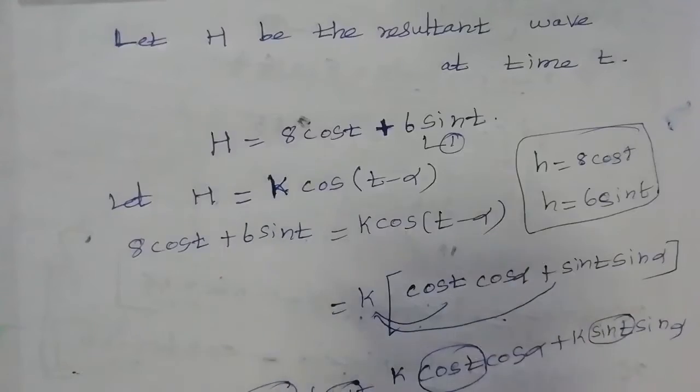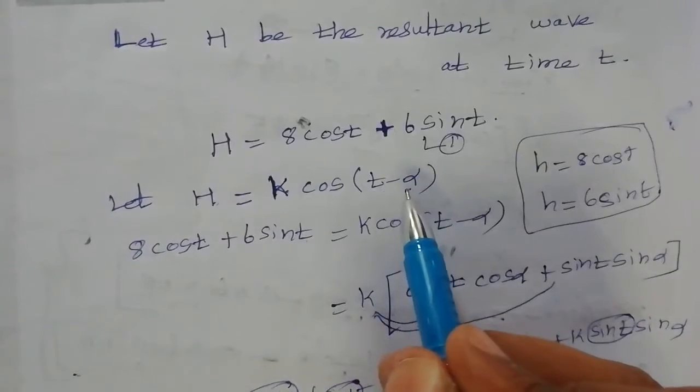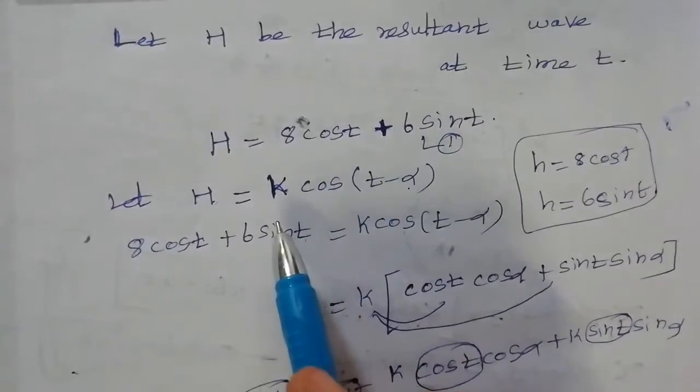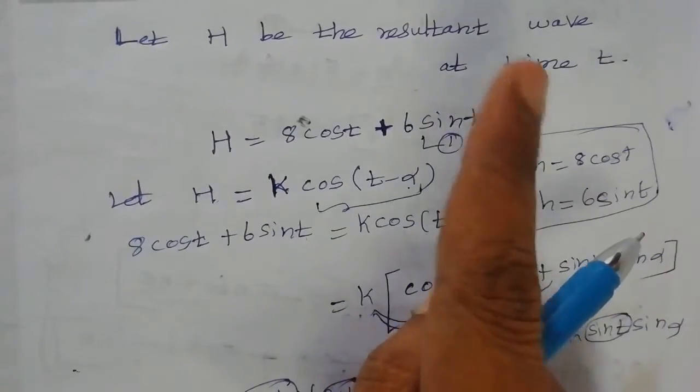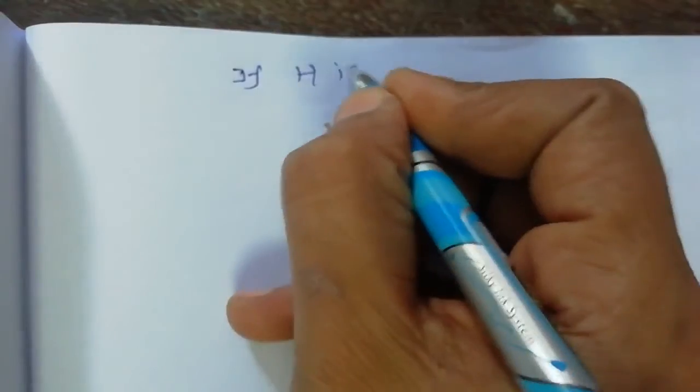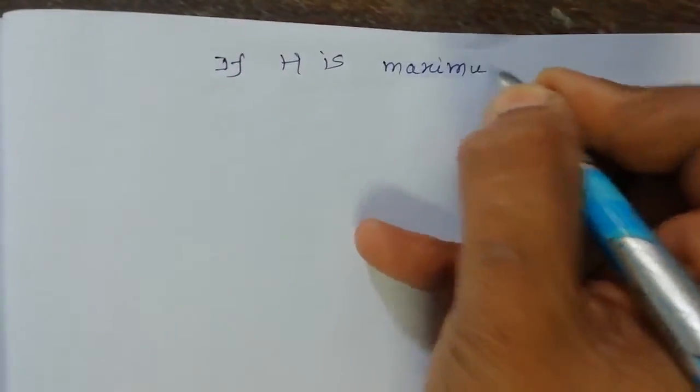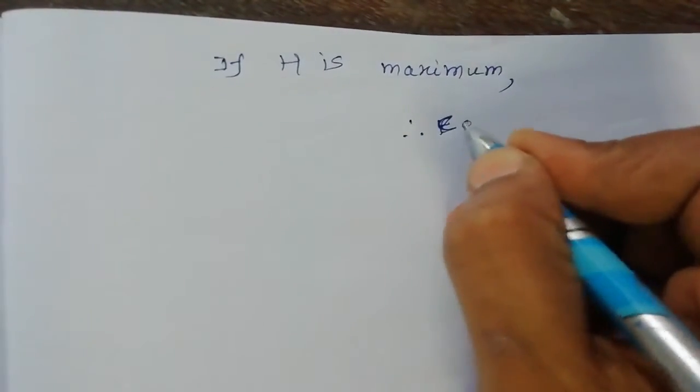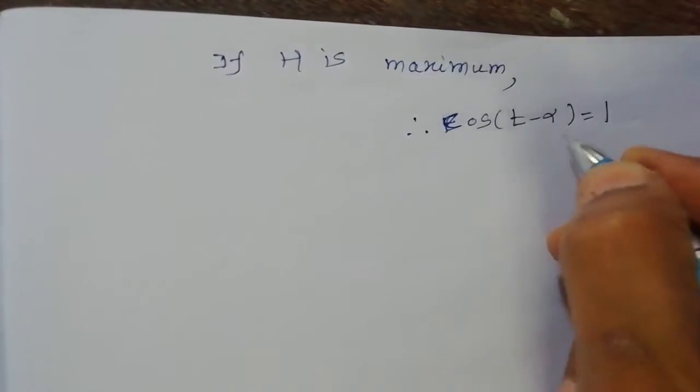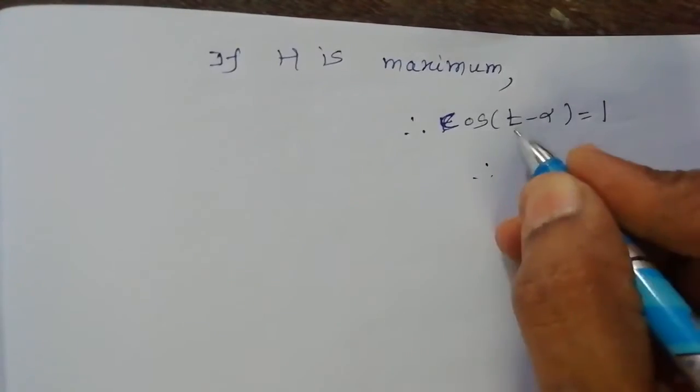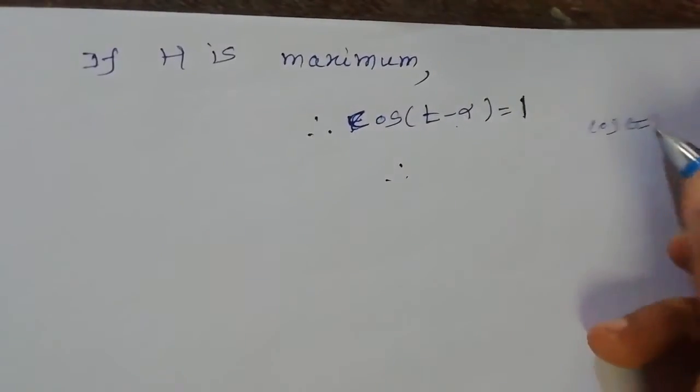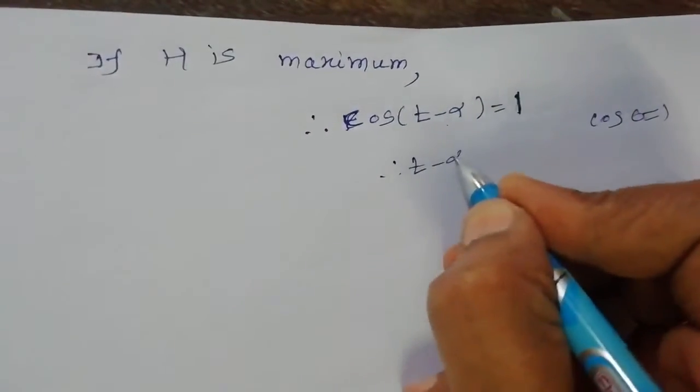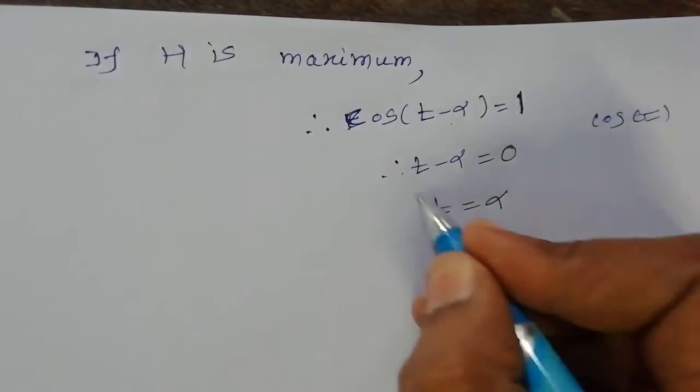Height maximum value is 10. Because cos theta maximum value is 1. If height is maximum, therefore cos of t minus alpha equal 1. Cos theta maximum value 1. Cos 0 equals 1, so the angle t minus alpha is equal 0. Therefore t equal alpha.